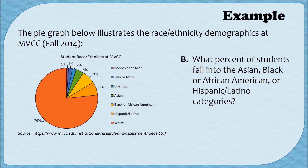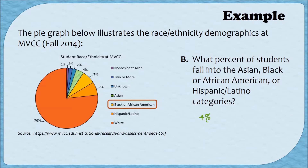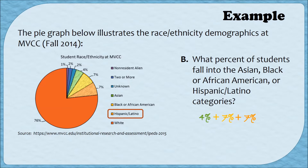Part B: what percent of students fall into the Asian, black or African American, or Hispanic Latino categories? The Asian students are represented by the green piece at 4%. The black or African American category is represented by the yellow piece at 7%. The Hispanic Latino category is represented by the orange piece at 7%. In total, 18% of the students fall into these three categories.